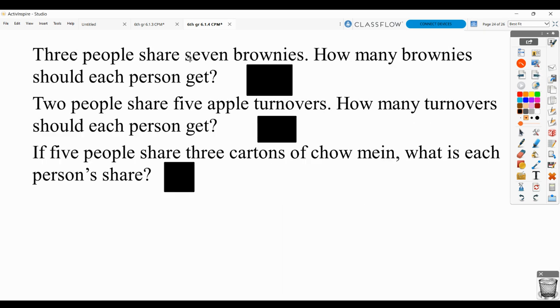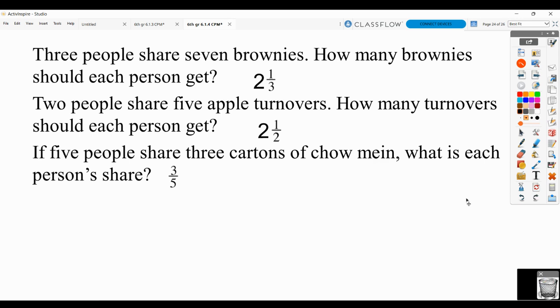Three people share 7 brownies. 7 divided by 3 is 7 thirds, which becomes the mixed number, 2 and 1 third. Two people share 5 apple turnovers. 5 divided by 2, 5 halves or 2 1⁄2. And 5 people share 3 cartons of chow mein. 3 divided by 5, 3 fifths. So you're always taking the amount of the food divided by the number of people. And if it's an improper fraction, change it to a mixed number.